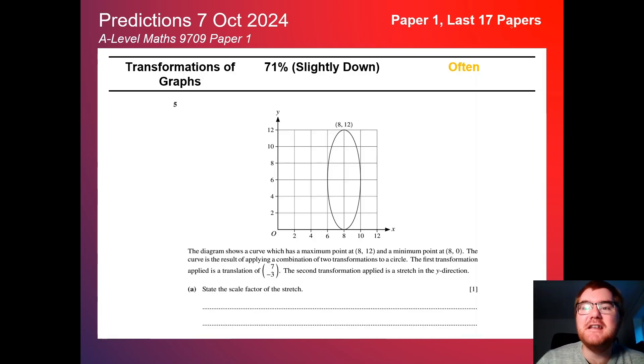We've gone through the last 17 papers to make sure that these predictions are as up-to-date as we can make them. We have transformations of graphs here, slightly down at 71%, but notice this is a big thing with A-Level compared to IGCSE - they love to combine topics together. In this case we've got a transformation of graphs, but we've also got a circle to work with as well, which I'll talk about later in the video.